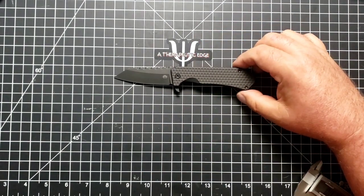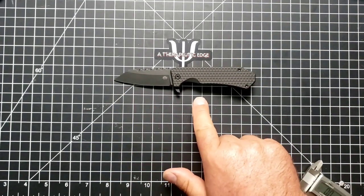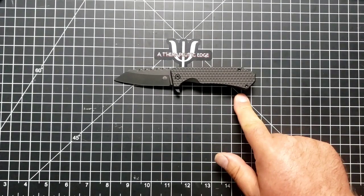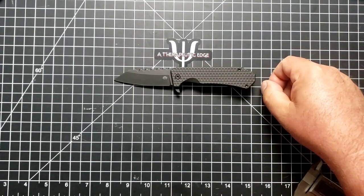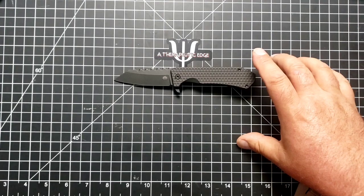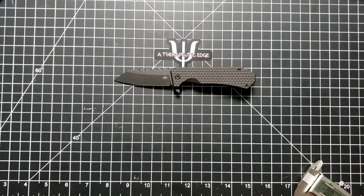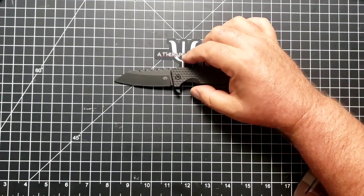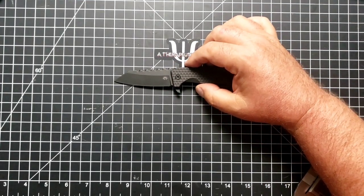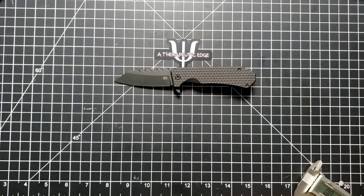The overall length is one, two, three, four, five, six, seven, and an eighth inches long. When I spoke to Off-Grid, they kept this below three inches to keep it legal carry in most places, and at just over two and three quarters inches, you are in legal territory for most places. The blade itself is right at three inches, but the cutting edge is below.